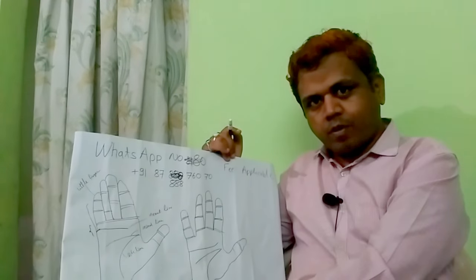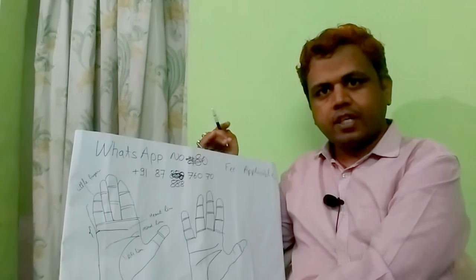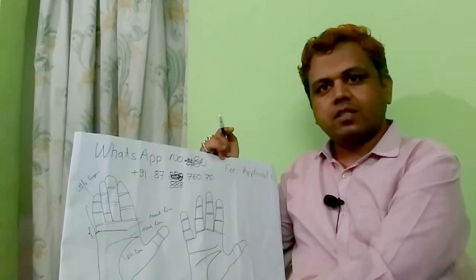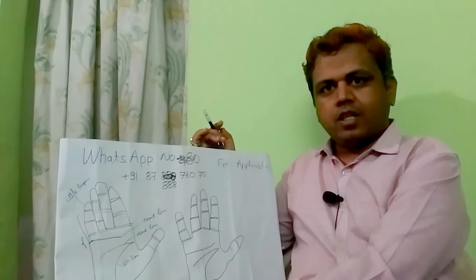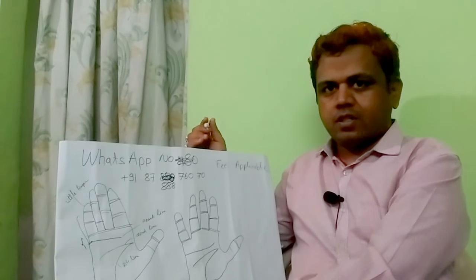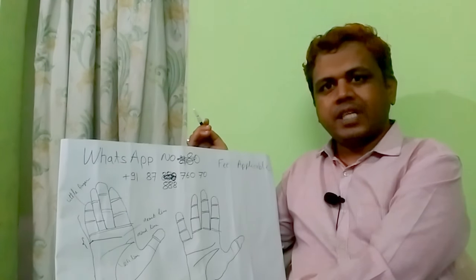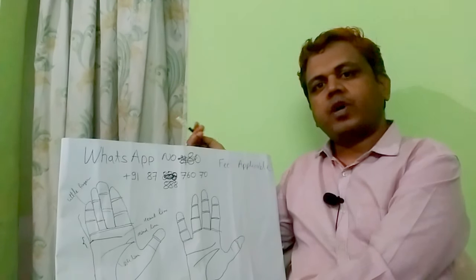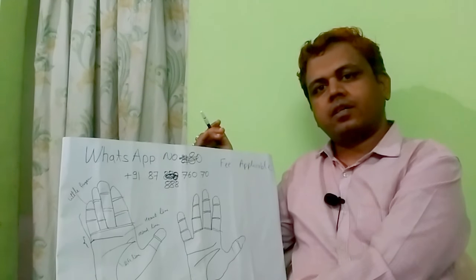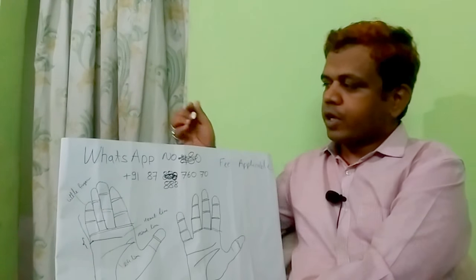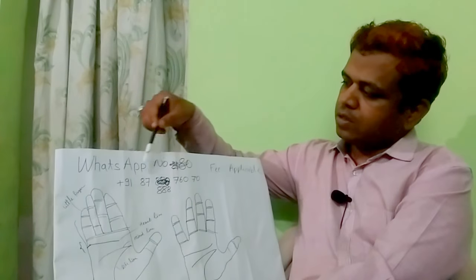My name is Ashish from Quadriorian Publications. Today I will teach about marriage line. In this topic I will show you how to calculate your marriage date. If you want to know what is your marriage time or date, then you can call me on this WhatsApp number.